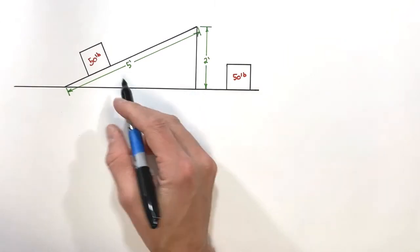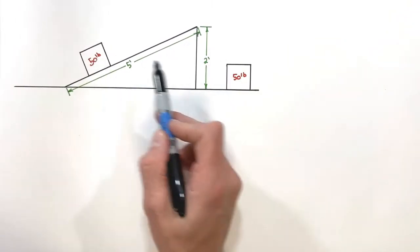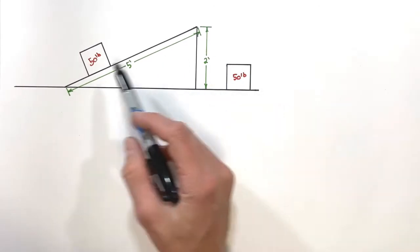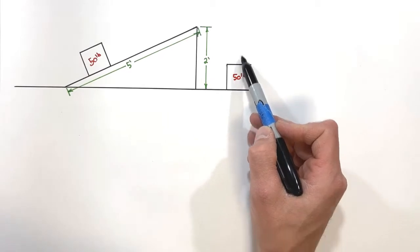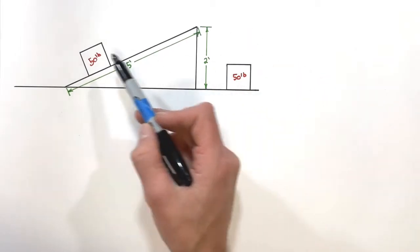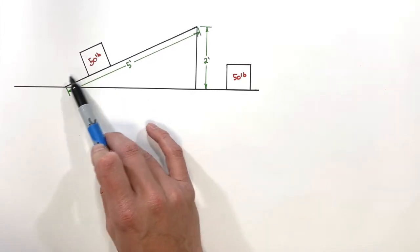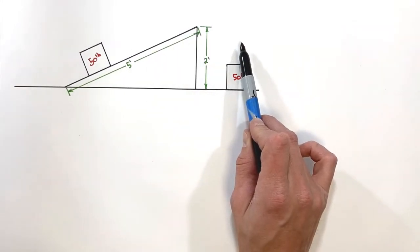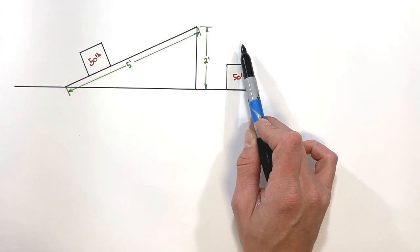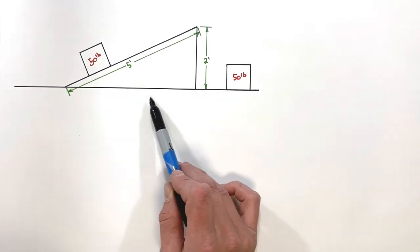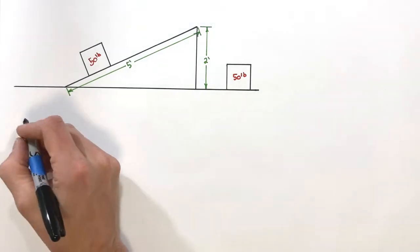Today we're going to take a look at an inclined plane using two identical boxes. One box we're going to push up the inclined plane; the other we're simply going to lift vertically. We want to compare the forces required in each case, which will allow us to solve for things like IMA and AMA for this inclined plane — which is of course a simple machine.